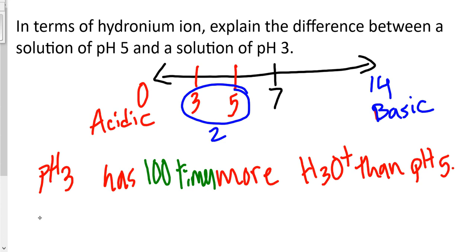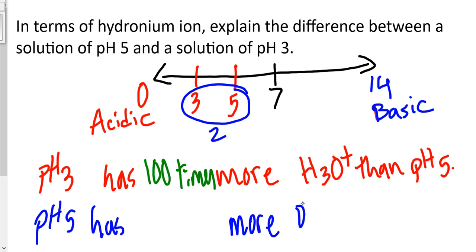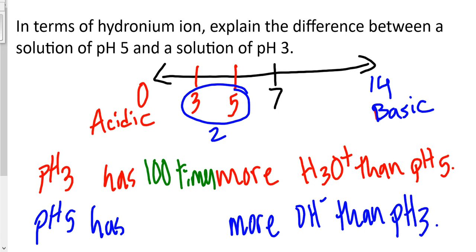In terms of hydroxide ion, we can say that pH 5 has more hydroxide ion than pH 3. The factor is still the same since the difference is 2 — after 1 you have two zeros, which makes it 100. So pH 5 has 100 times more hydroxide ion than pH 3.